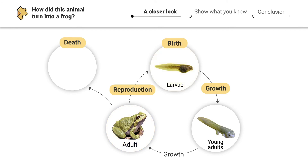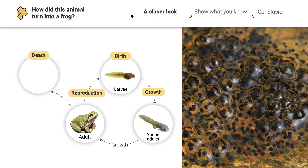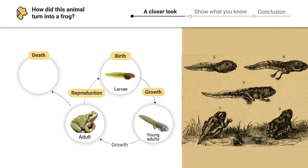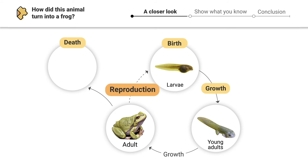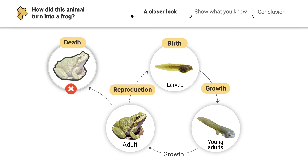Unlike most animals, adult amphibians look totally different than their younger selves. That's because during their life cycle, amphibians go through lots of changes. They hatch from small eggs and are born as tadpoles, but as they grow they go through metamorphosis and entirely change. As adult frogs, they reproduce and over time eventually die.